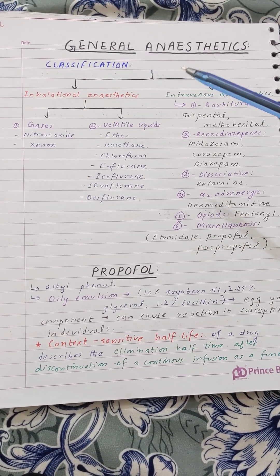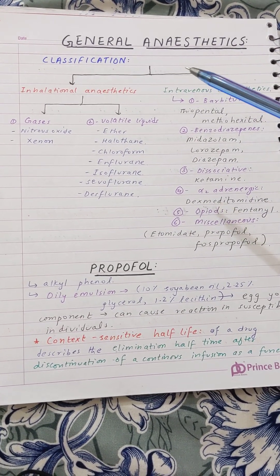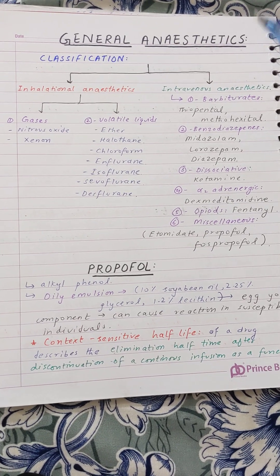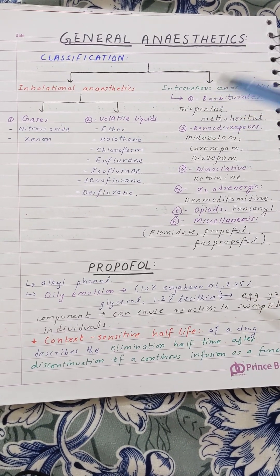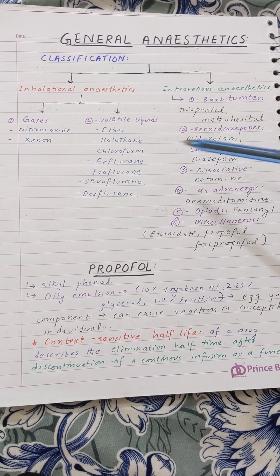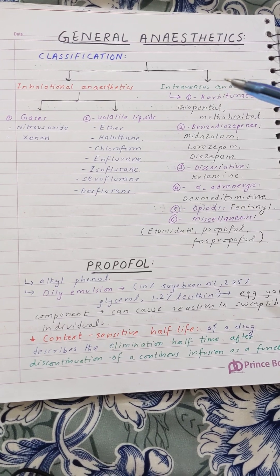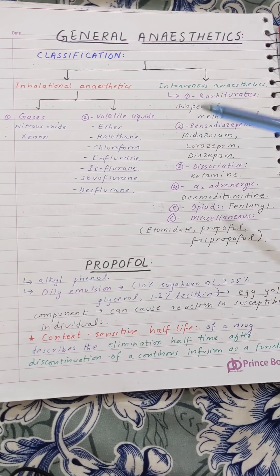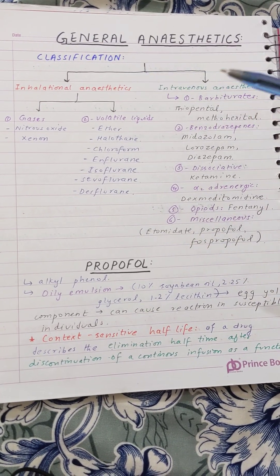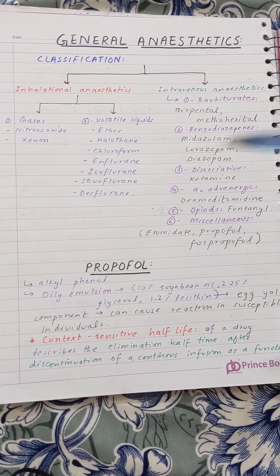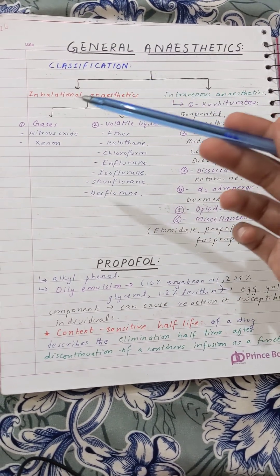General anesthetics are drugs which are helpful in inducing CNS depression. They have a triad of their actions: muscle relaxation, autonomic function inhibition, analgesia, and amnesia. This is an important thing — we use them in major surgeries.